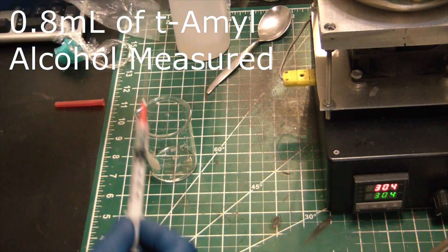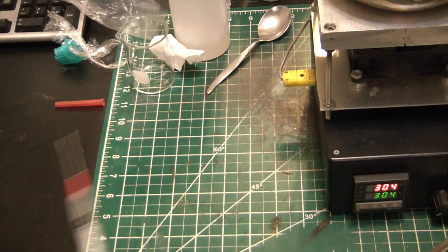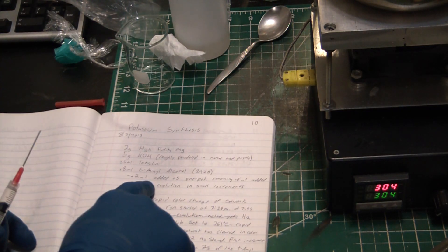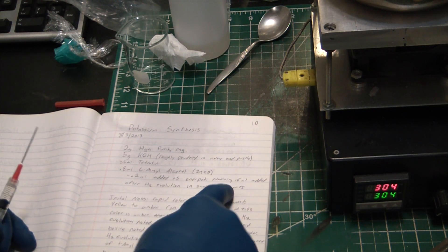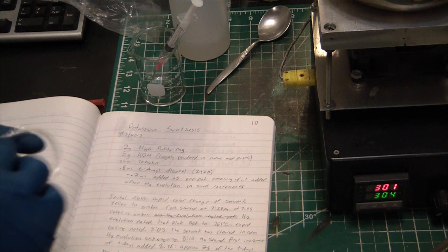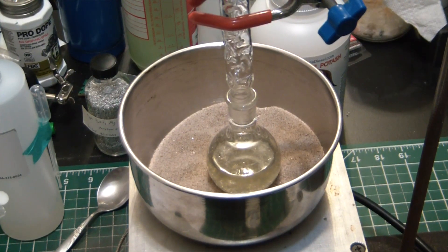Alright, there's exactly 0.8 mils. And now I'm going to inject a small amount. Looks like in my successful reaction I injected 0.2 to start and then added the remaining 0.6 out of the total of 0.8. And then we'll add the remaining in a little bit.